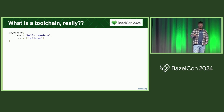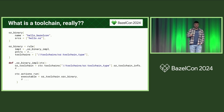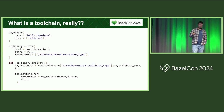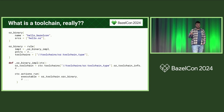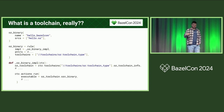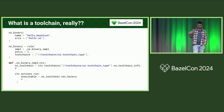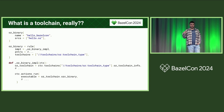For that, we look into the rule implementation. Here we can see that in the rule function, you can give it a list of toolchains, and what this does is make the toolchain available during the actual rule execution. Then in the implementation function, through the context object, we can access the toolchains and some information provided by the toolchain — like the path to the compiler.